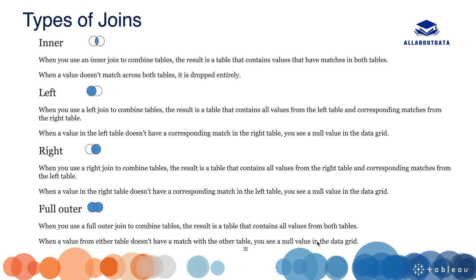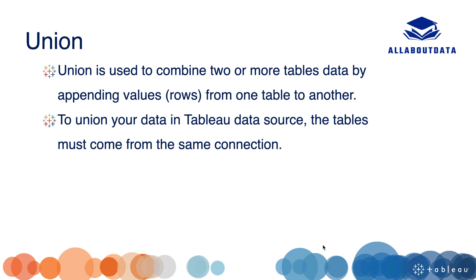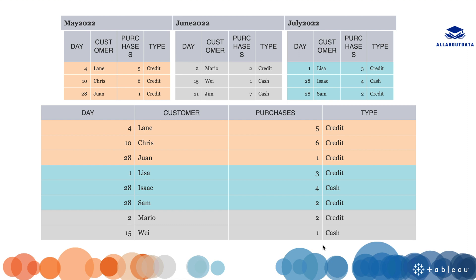Full outer join returns all the data from both tables. When a value from either table doesn't have a match with the other table, you will see a null value. Union is used to combine the data from two or more tables by appending the rows from one table to another. For example, with monthly data for May, June, and July — each having day, customer, purchase, and type — union appends all rows together.